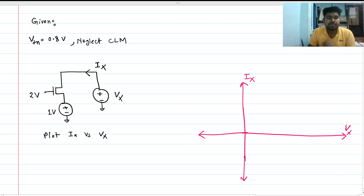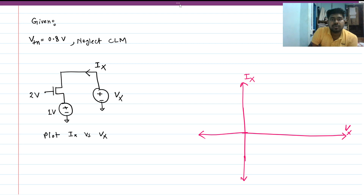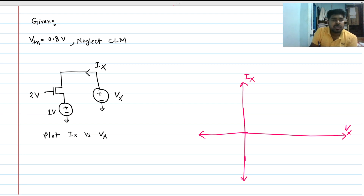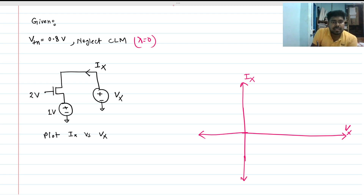Welcome to this session. Today we will solve an interview question. This is an NMOS circuit. Given that the threshold voltage of the NMOS is 0.8 volts, and we have to neglect channel length modulation, meaning lambda is zero. We have to find the current through this MOSFET with respect to the voltage Vx.